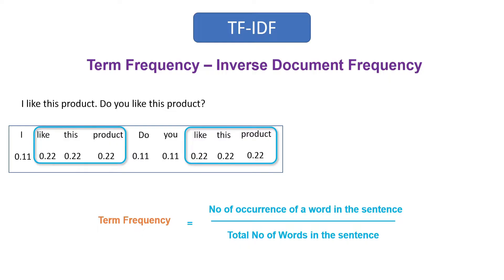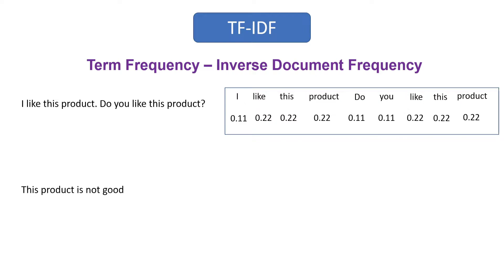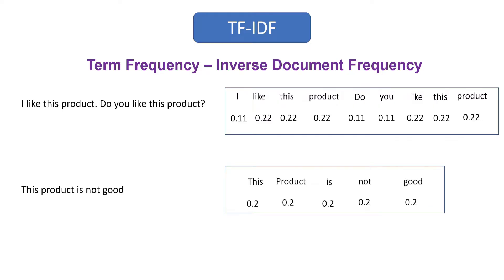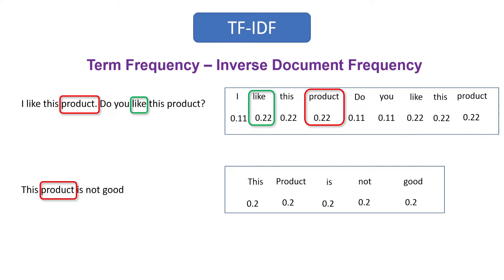But we can't consider term frequency alone as the vector representation of a sentence. Something is wrong with term frequency. Now we have one more sentence: 'This product is not good.' If you look at the word 'product', which occurred in all two sentences, it should get less weightage. And the word 'like' occurred in only one sentence, so it should get high weightage. But if you look at the output, these two words get the same weightage — 0.22. This is not what we are expecting from TF-IDF.